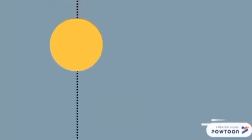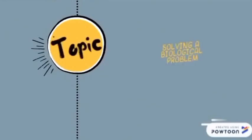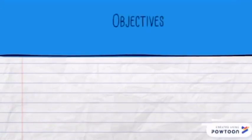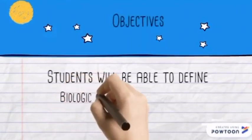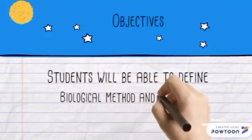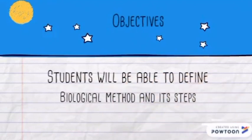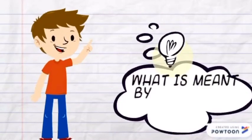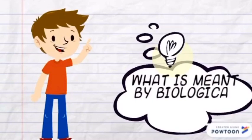The question arises: how can we solve these questions? That's what we are going to see today. Our today's topic is 'Solving a Biological Problem.' Our objective is that students will be able to define the biological method and its steps. First of all, you need to know what is meant by a biological problem.